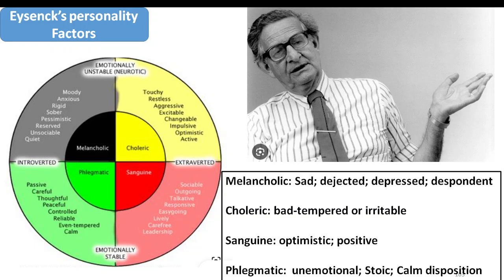When someone is in the zone of emotional instability and extroversion, the person is likely to be touchy, restless, aggressive, excitable, changeable, impulsive, optimistic, and active - and likely to be bad tempered or irritable. The combination of all these has been called choleric by Eysenck, which would be synonymous with a bad-tempered or irritable person who is extroverted but emotionally not very stable.